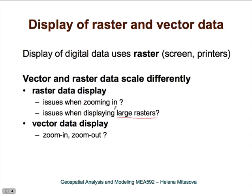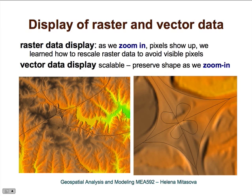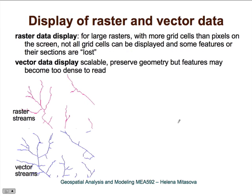And how does that compare with vector data? Here we have a raster digital elevation model displayed along with vector data — major roads. When we zoom in, you can see that for the raster data, we start to see the pixels. On the other hand, the vector data representation is very good and it preserves the shapes very well. Another issue with raster data is when we have very large rasters and can't display every cell stored in the dataset, especially for raster representation of lines or points, because if not all grid cells can be displayed, some features will get lost.